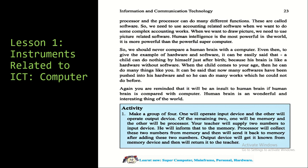There is an activity: make a group of four. One will operate the input device and another the output device. Of the remaining two, one will be memory and the other will be processor. The teacher will supply two numbers to the input device, who will inform memory. The processor will collect the two numbers from memory, add them, and send the result back to memory. The output device will get the result from memory and return it to the teacher. We have gone through many important things in this lesson — write them down or underline them in your book.